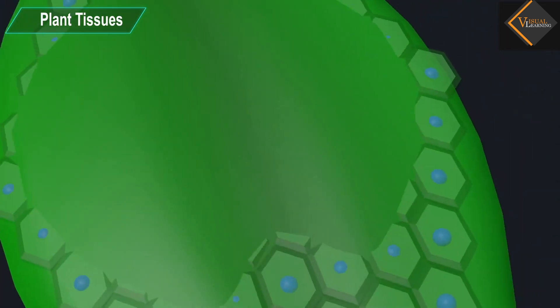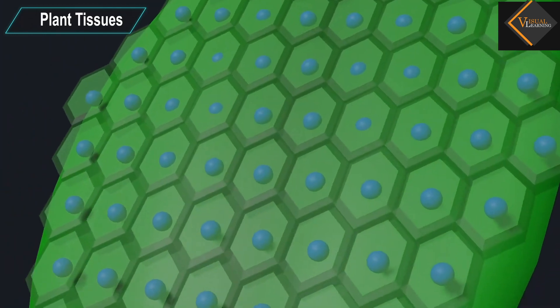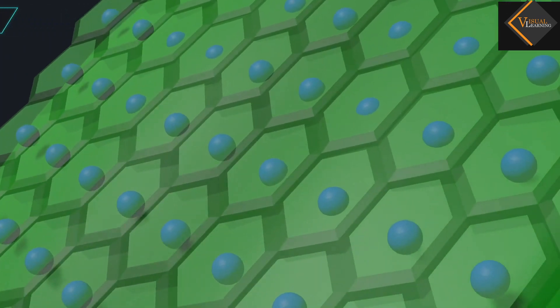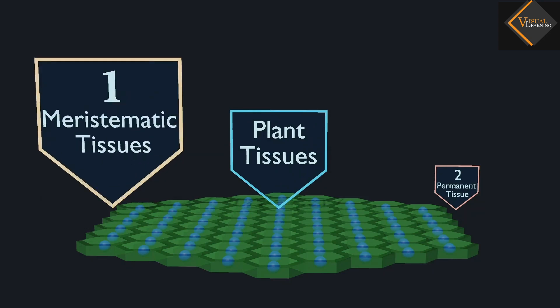Plant tissues are composed of cells that are similar and perform a specific function. Plant tissue systems fall into one of two general types: meristematic tissue and permanent tissue.